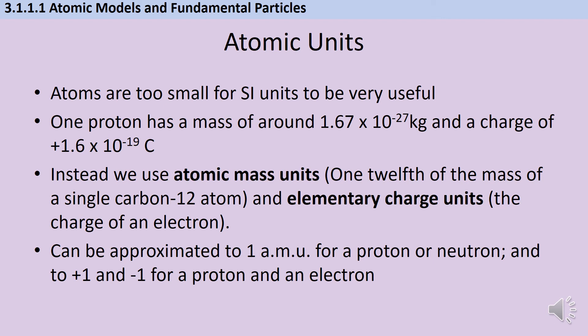Realistically, though, we're probably still going to end up rounding. So the mass of a proton or neutron becomes one atomic mass unit, and then the charge of a proton becomes plus one, and the charge of an electron becomes minus one.